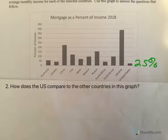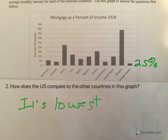How does the U.S. compare to other countries? It is absolutely the lowest on this graph when talking about mortgage as compared to income. That's a big difference.